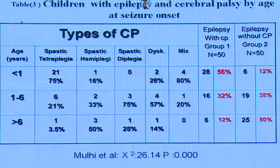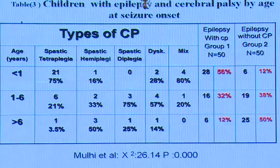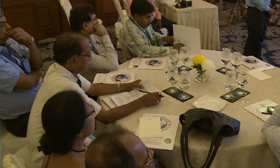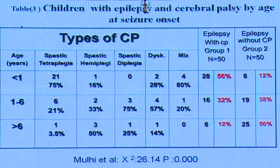Comparing epilepsy in CP patients versus epilepsy without CP: epilepsy in CP starts much earlier. In this study, 56% of all CP patients had epilepsy before the first year, compared to only 12% without CP. Within the first six years, another 32% of CP patients developed epilepsy. Very few CP patients with epilepsy presented after six years, whereas in the non-CP population the presentation was about 50%.